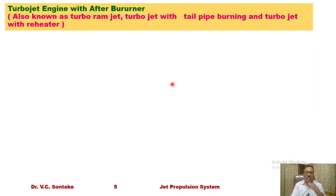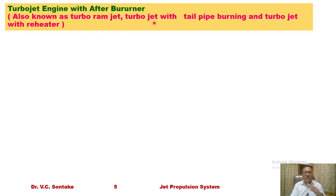Let us first discuss in detail about the turbojet engine with afterburner. It is also known as turbo ramjet, turbojet with tailpipe burning, and turbojet with reheater.